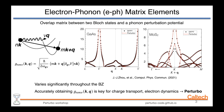The electron-phonon matrix elements, as we have seen in the first lecture, is the overlap matrix between two Bloch states and a phonon perturbation potential. An initial electron at band index n and momentum k gets scattered into a different band with index m and momentum k+q by absorbing or emitting a phonon with mode index ν and momentum q. This matrix element g_{mn,ν}(k,q) varies rapidly with phonon momentum and phonon mode index.